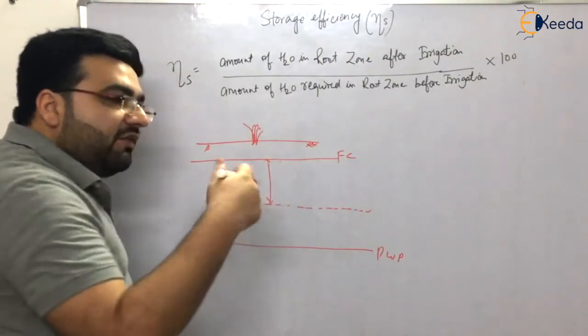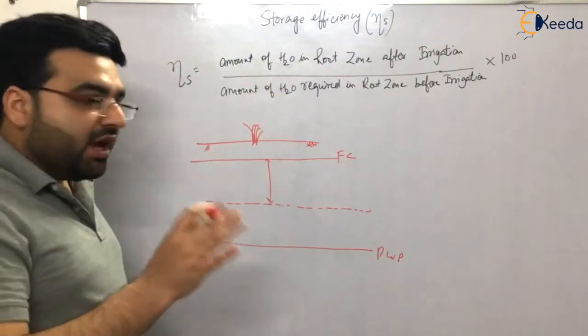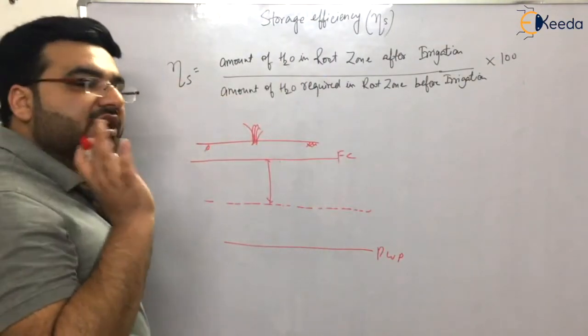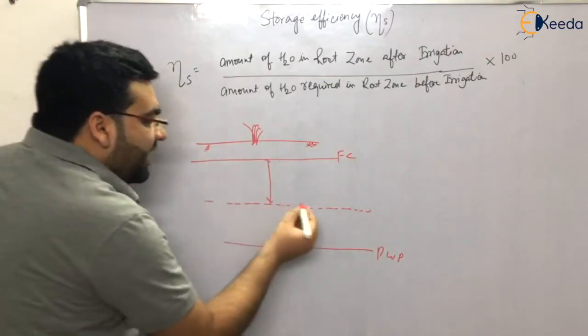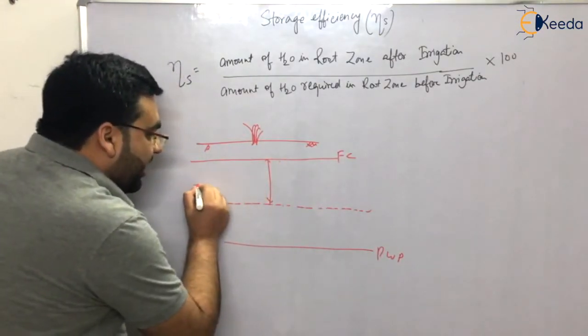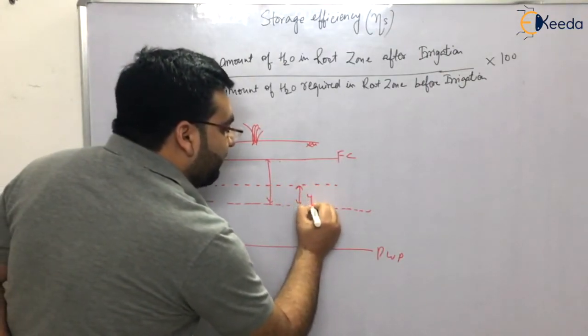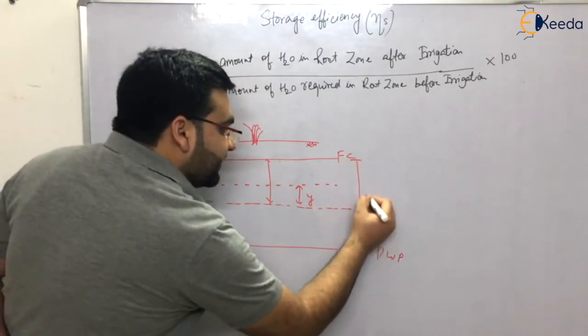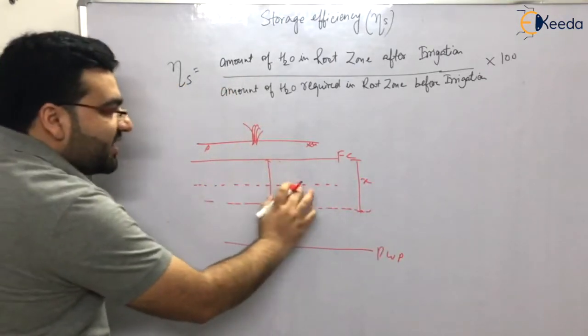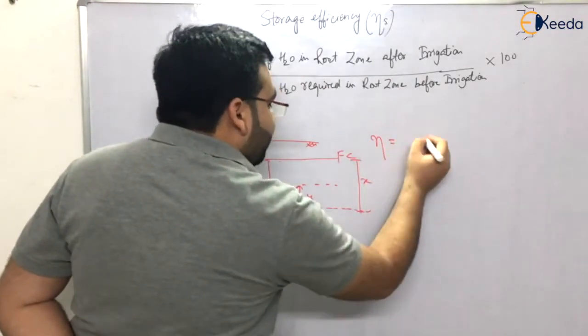Now you have done irrigation. But it is found that this level has not gone to the field capacity, but it has reached somewhere here. That is your y, and let us say this is also x. So you could add x, but you have just added y, so your efficiency eta will be equal to y divided by x.